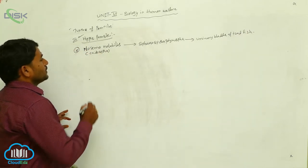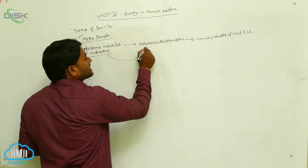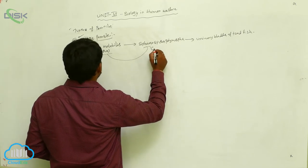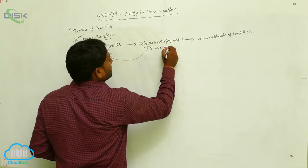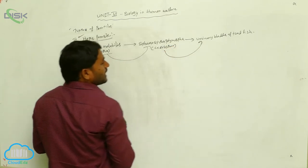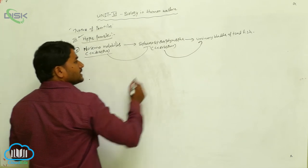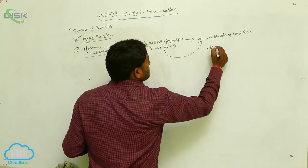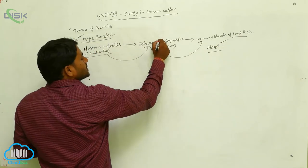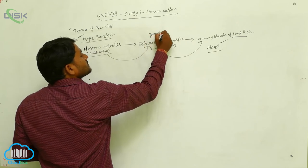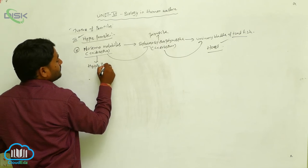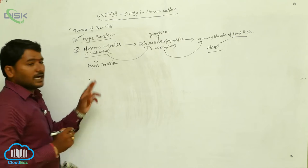So Nosema notabilis spends its life as a parasite in Spirospora polymorpha. Spirospora polymorpha is also a nidosporan parasite living in the urinary bladder of toadfish. Toadfish is the host, Spirospora polymorpha is the parasite, and Nosema notabilis is the hyper parasite.